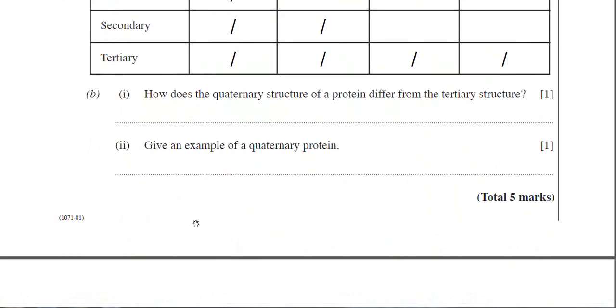Part B, how does the quaternary structure of a protein differ from the tertiary structure? With a quaternary structure, you actually have a minimum of two polypeptide chains joined together. Some proteins with a quaternary structure have four polypeptide chains joined together, and an example of that would be hemoglobin. So the tertiary structure then just has one polypeptide chain, and the quaternary structure will have at least two polypeptide chains joined together, but it could be more. As I've said, it's actually four in hemoglobin.